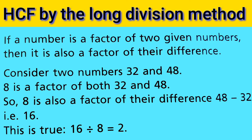Property number four: if a number is a factor of two given numbers, then it is also a factor of their difference. Consider two numbers, 32 and 48. Eight is a factor of both 32 and 48, so 8 is also a factor of their difference: 48 minus 32, which is 16. This is true — 16 divided by 8 equals 2.